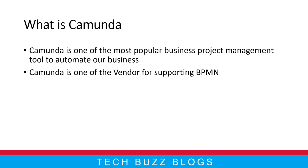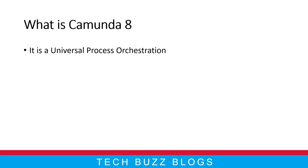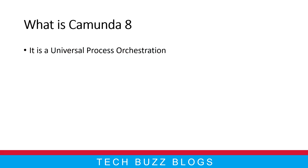Camunda is mainly called a universal process orchestrator. When you are working with big applications, you may face a lot of issues between the business team and development team. It orchestrates complex business processes between people, systems, and devices, helping developers, business teams, and users collaborate and develop end-to-end processes easily.